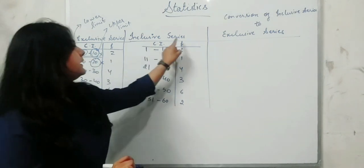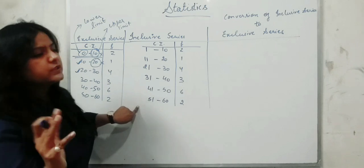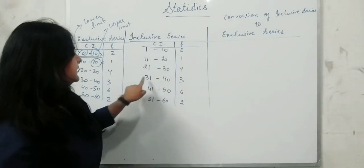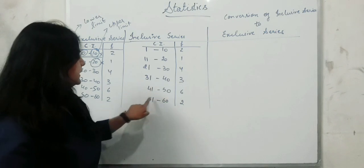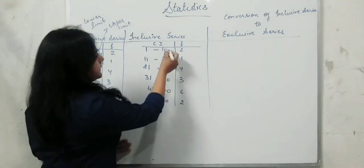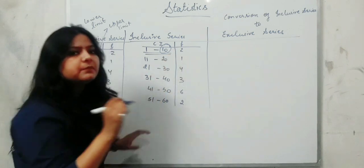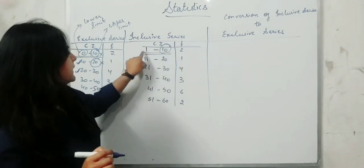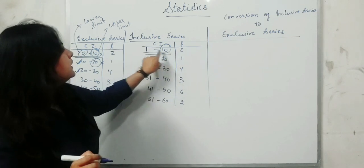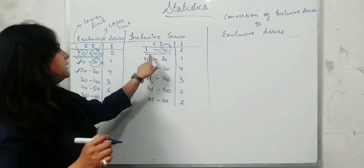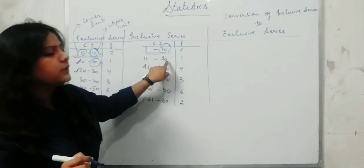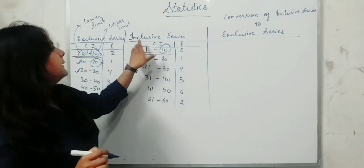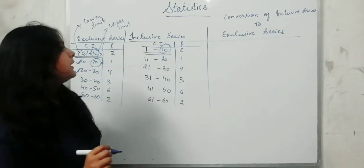If we are talking about inclusive series, there is no such confusion. The ranges are: 1–10, 11–20, 21–30, 31–40, 41–50, 51–60. The upper limit is included within each class interval in this series — for example, 10 is included in 1–10, and 11 is included in 11–20. This is the name of inclusive series.